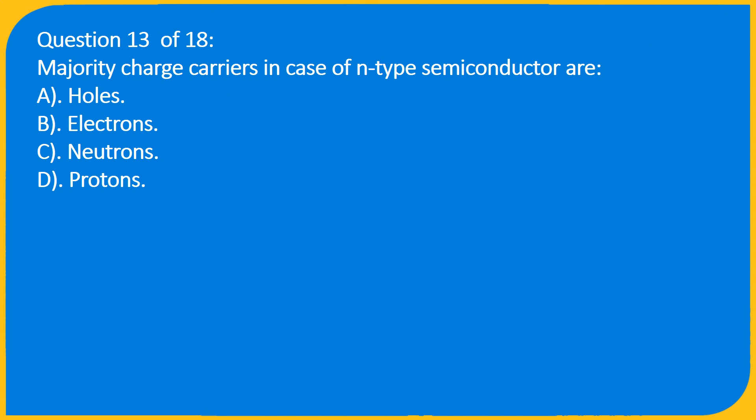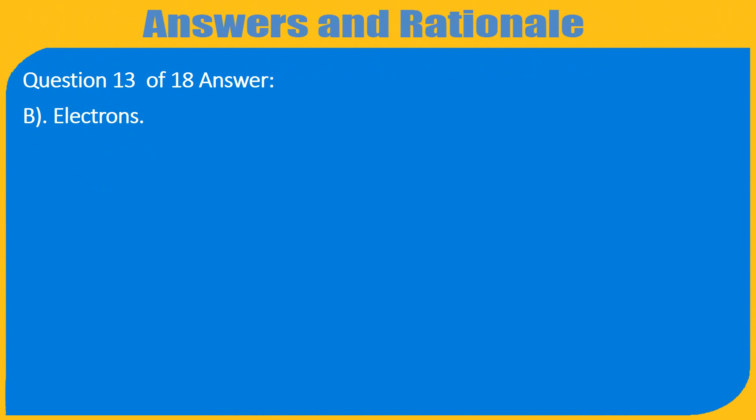Question 13 of 18: Majority charge carriers in case of n-type semiconductor are: A. Holes, B. Electrons. Question 13 of 18 Answer: B. Electrons.